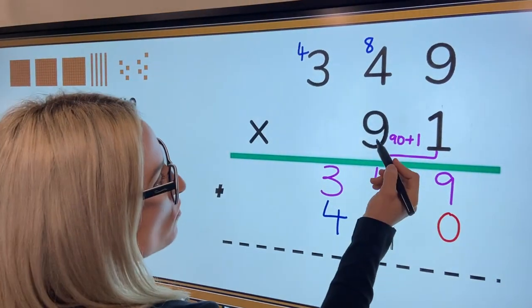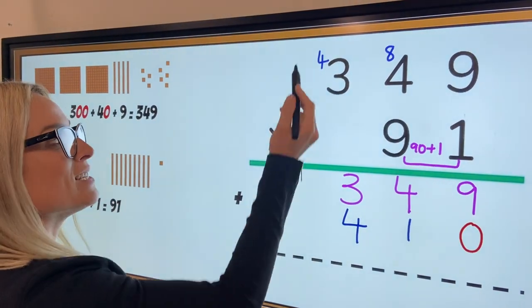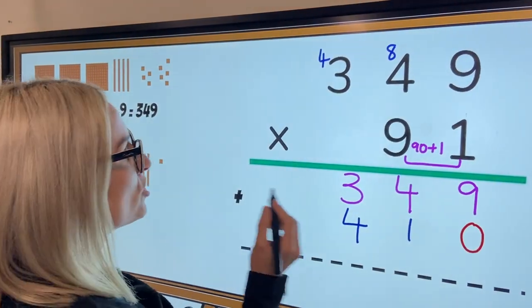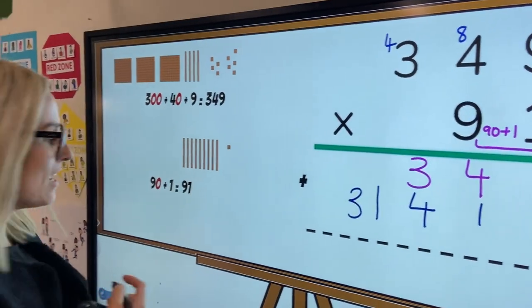Now we're going to multiply our nine by three, which gives us 27, but we need to add on our four as well, which is going to give us 31, but we're not quite done yet.